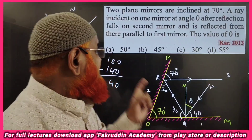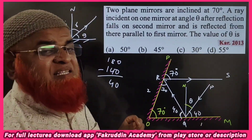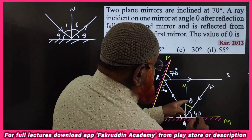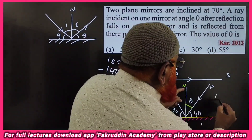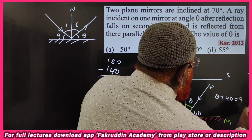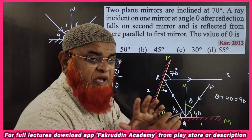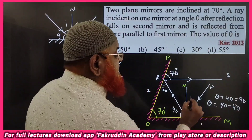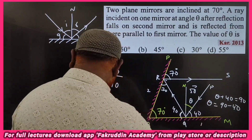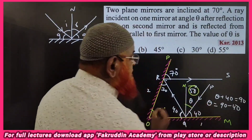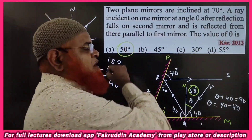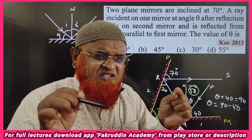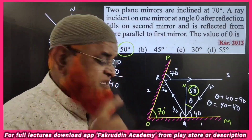Because of glancing angles, both are 40 degrees. Since the normal makes 90 degrees with the mirror, theta plus 40 must equal 90. Therefore theta equals 90 minus 40, which is 50 degrees. The correct answer is 50 degrees. Hope you enjoyed this lecture. For full lectures, download the app given in the description.